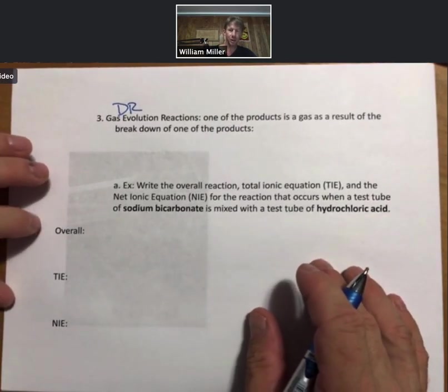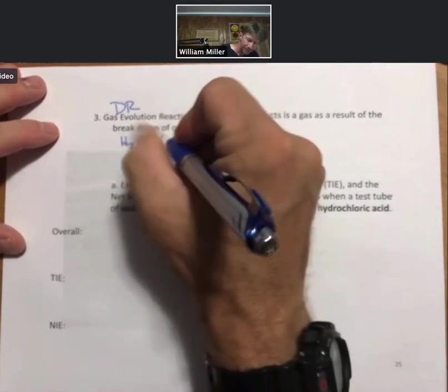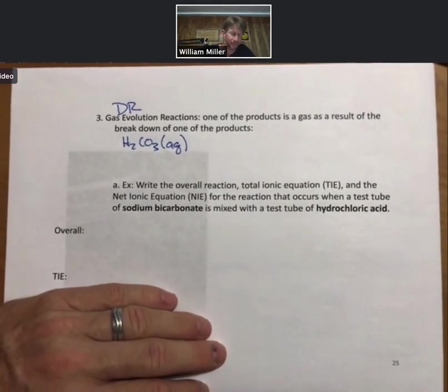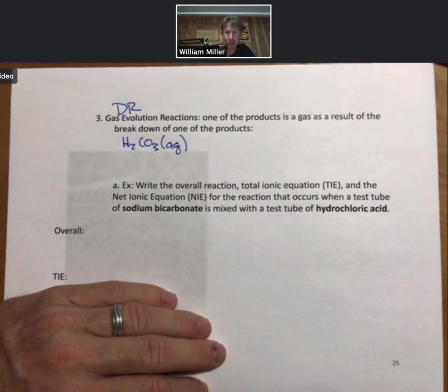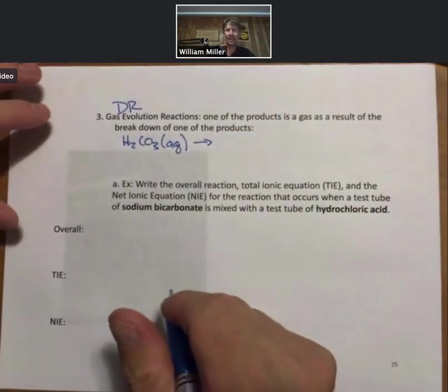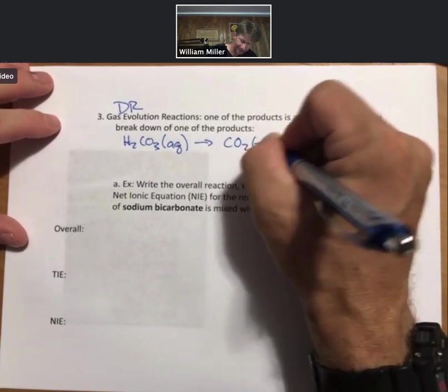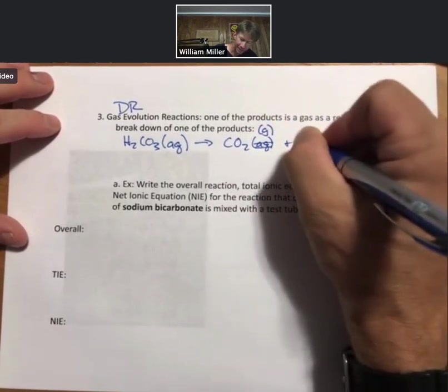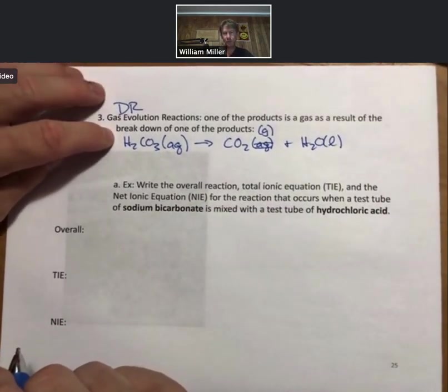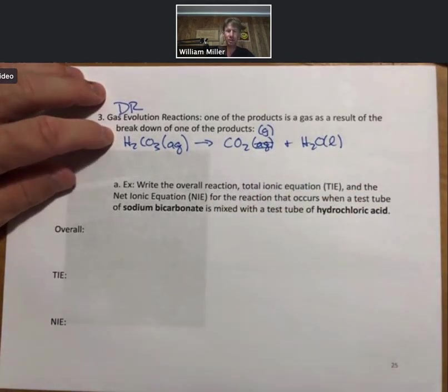When you write an overall reaction, sometimes one of the products will be carbonic acid, H2CO3. That is a weak acid that is still existing dominantly as whole molecules. However, this is a special case where it spontaneously breaks down into carbon dioxide gas and H2O liquid. And so, any time you form carbonic acid as a product, cross it out, write carbon dioxide and H2O.